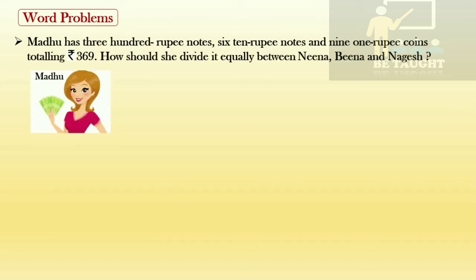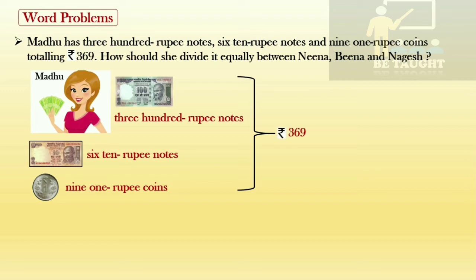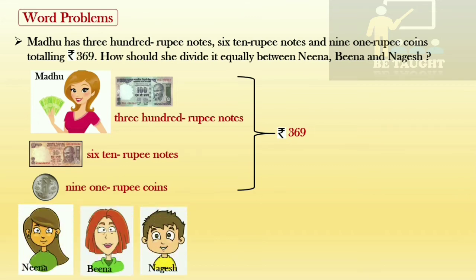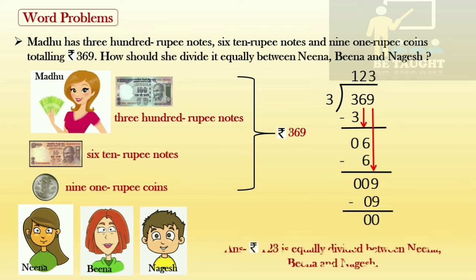Word problem: Madhu has three 100-rupee notes, six 10-rupee notes, and nine 1-rupee coins, totaling ₹369. How should she divide it equally between Nina, Bina, and Nagesh? We divide 369 by 3. Taking one digit at a time — three ones are 3, three minus three is 0. Bring the six down — three twos are 6, six minus six is 0. Bring the nine down — three threes are 9, nine minus nine is 0. Final answer: ₹123 is equally divided between Nina, Bina, and Nagesh.